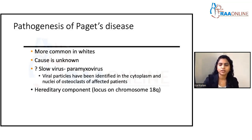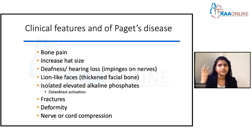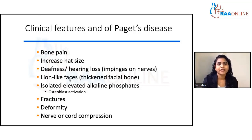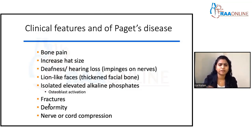Clinical features include bone pain, increasing head size as skull bones thicken, and hearing loss as the bones around cranial nerve foramina thicken. Thickened facial bones can result in a leonine-like face. Alkaline phosphatase will be elevated due to increased osteoblastic activity. Even though bone is thick, the haphazard arrangement makes it prone to fractures.